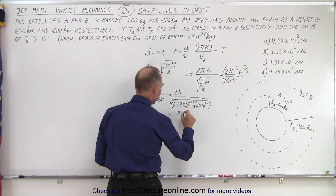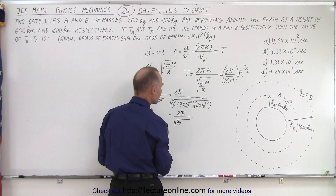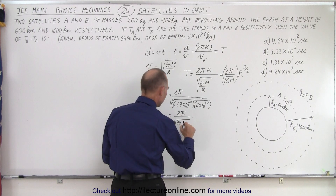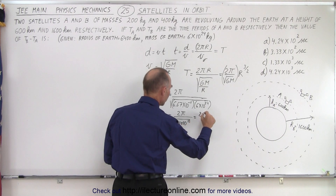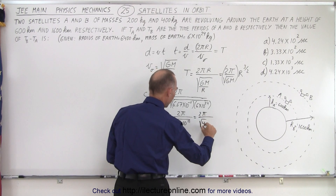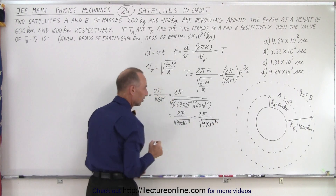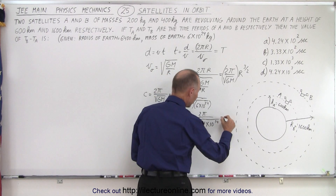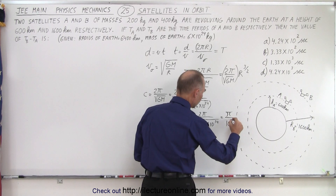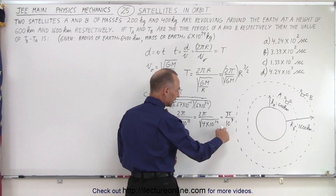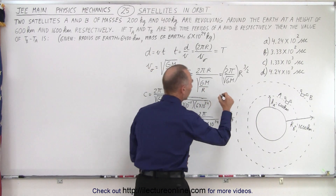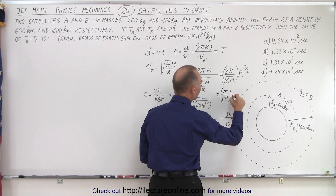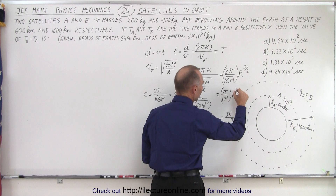So C equals 2π divided by the square root of 40 times 10 to the minus 11 times 10 to the 24, which is 10 to the 13th. This can be written as 2π divided by the square root of 4 times 10 to the 14th. The square root of 4 is 2, and 2 divided by 2 cancels, leaving π divided by 10 to the 7th, since the square root of 10 to the 14th is 10 to the 7th. So our constant is π over 10 to the 7th, and the period equals (π / 10^7) · r to the three-halves power.